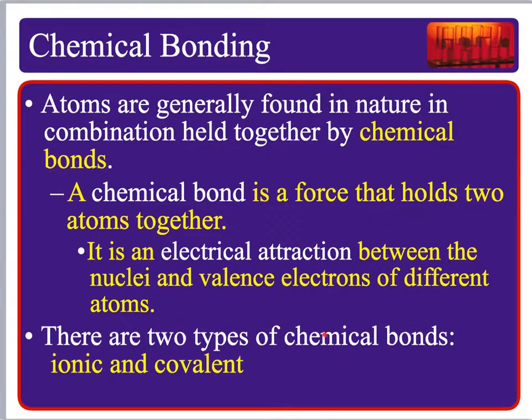When we talk about chemical bonds, there are two types: ionic and covalent. But in this first lecture, we're going to talk about ionic bonds.